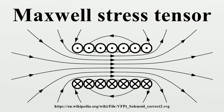The element ij of the Maxwell stress tensor has units of momentum per unit area per unit time, and gives the flux of momentum parallel to the i-th axis crossing a surface normal to the j-th axis per unit of time. These units can also be seen as units of force per unit area, and the ij element can also be interpreted as the force parallel to the i-th axis suffered by a surface normal to the j-th axis per unit area. The diagonal elements give the tension acting on a differential area element normal to the corresponding axis.